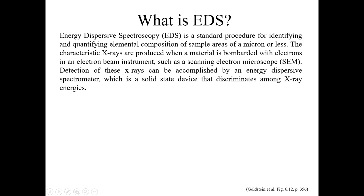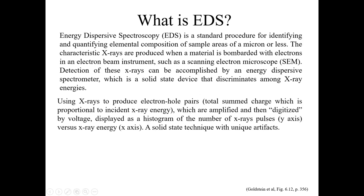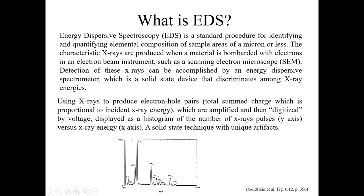Detection of these X-rays can be accomplished by an energy dispersive spectrometer, which is a solid-state device that discriminates among X-ray energies to identify different types of elements. It produces electron-hole pairs, with charge proportional to the X-ray energy, which is amplified and digitized, then displayed as a histogram of X-ray pulse counts on the Y-axis versus X-ray energy on the X-axis.